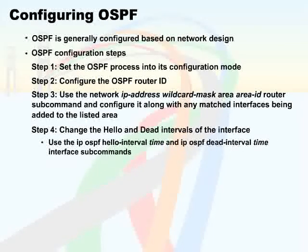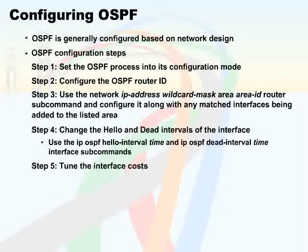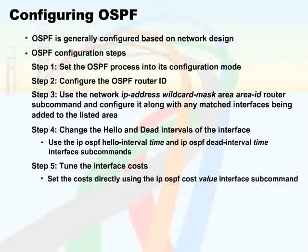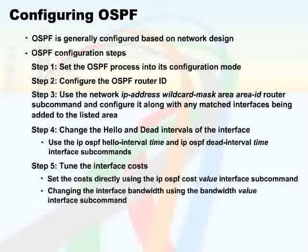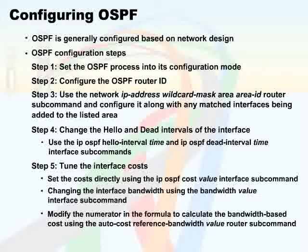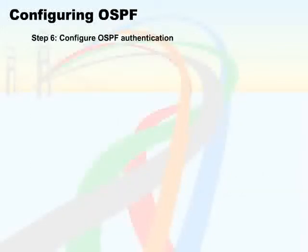In step 5, we tune the interface costs by setting the costs directly using the 'ip ospf cost value' interface sub-command, changing the interface bandwidth using the 'bandwidth value' interface sub-command, as well as modifying the numerator in the formula to calculate the bandwidth-based cost using the 'auto-cost reference-bandwidth value' router sub-command.